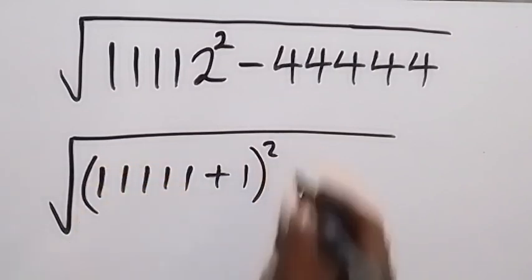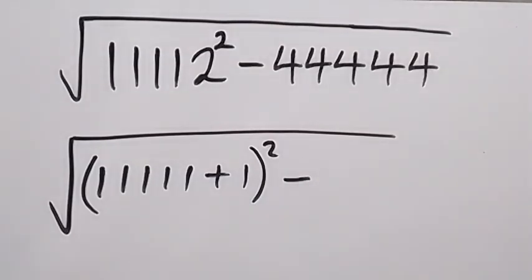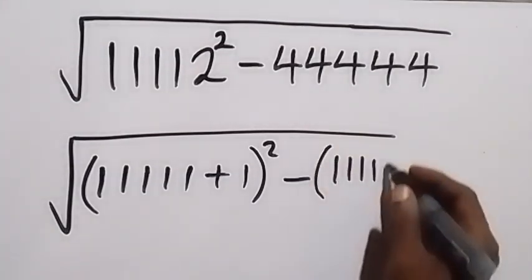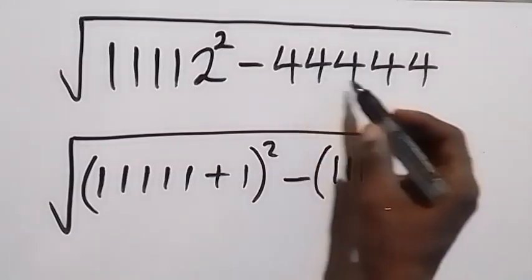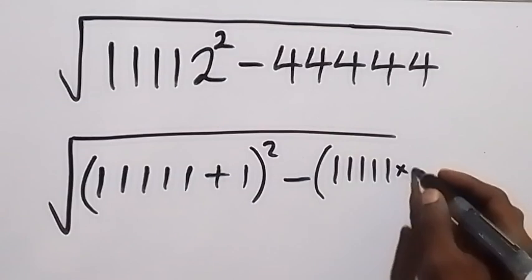Then minus also, this 444444 we can also replace that as 111111. We have five digits, then multiply by 4. When we multiply this by 4,